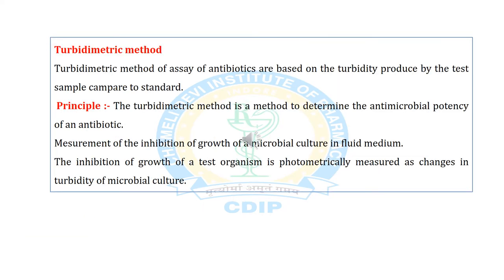Now we come to the turbidimetric method. The turbidimetric method of assay of antibiotics is based on the turbidity produced by the test sample compared to the standard. It is a method to determine the antimicrobial potential of an antibiotic by measurement of the inhibition of growth of a microbial culture in a fluid medium. The inhibition of growth of the test organism is photometrically measured as a change in the turbidity of the microbial culture.